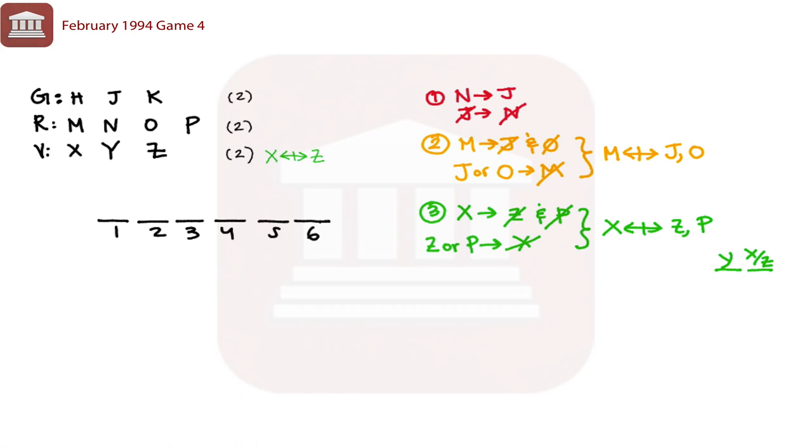Likewise, for rule number two, we know that M and O can't be selected together.